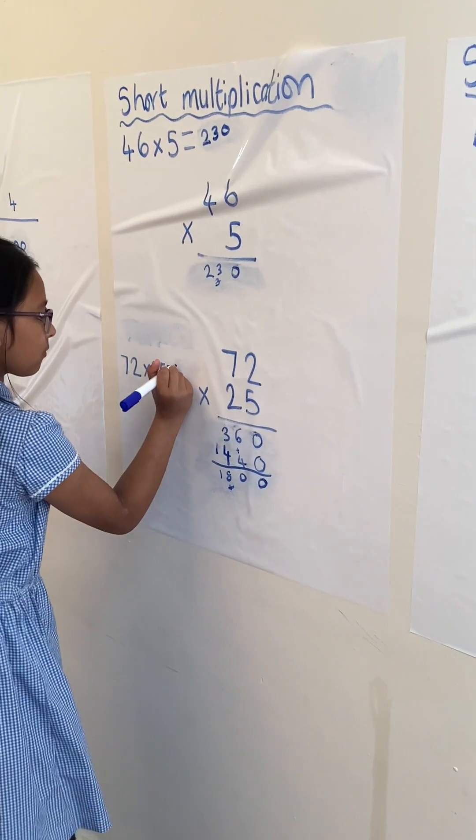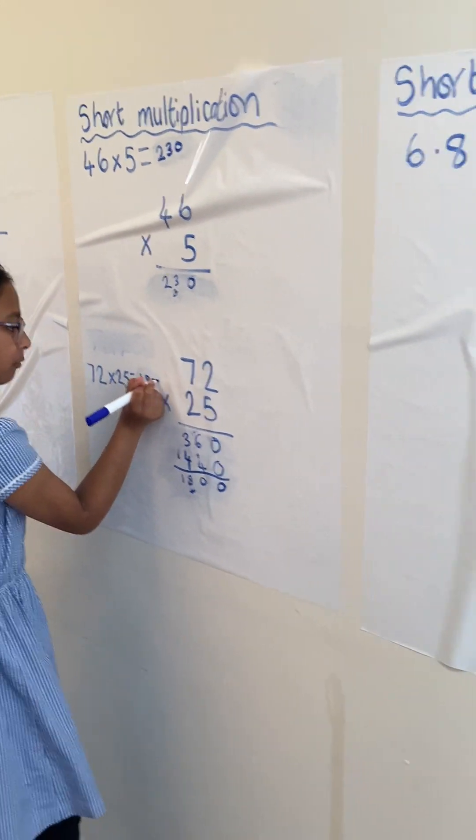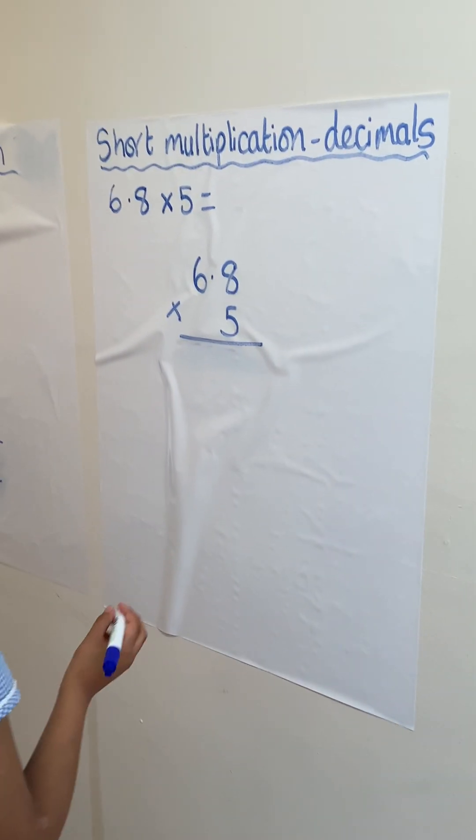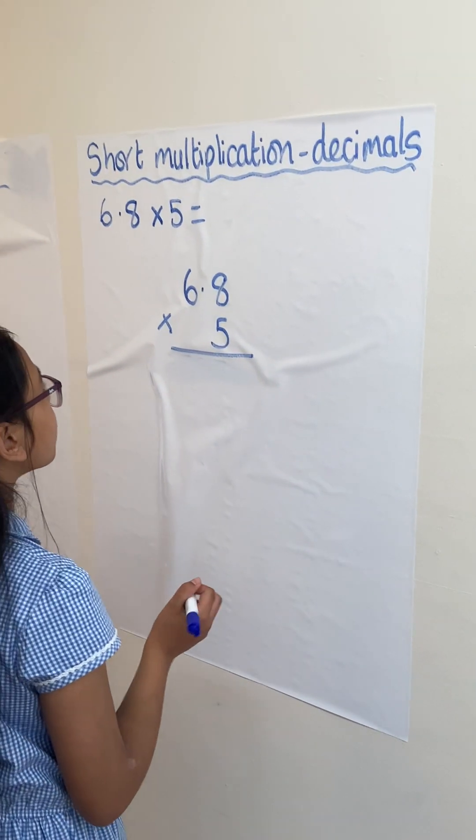So we've got 6.8 times 5, so we're going to move on to short multiplication showing decimals.